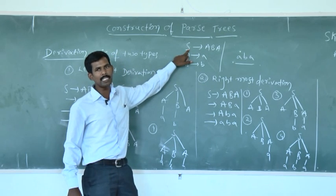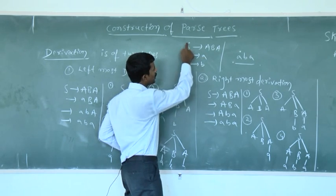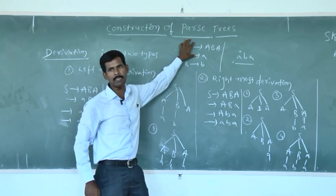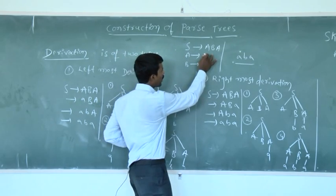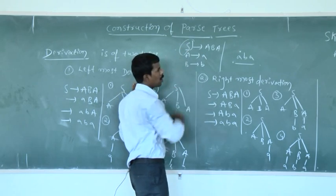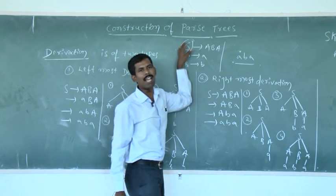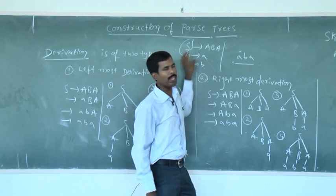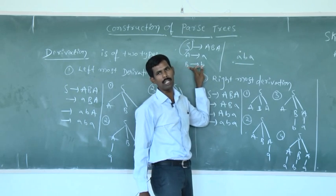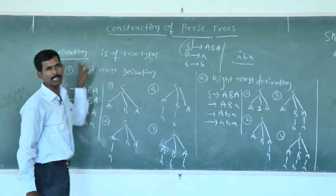Consider this grammar with three productions: S produces A B A; A produces a; B produces b. In this grammar, the capital letters — S, A, B — are non-terminals, the small letters a and b are terminals, and S is the start symbol. For example, I want to construct the string aba from this grammar. We can construct this string in one of two ways using the different types of derivation.